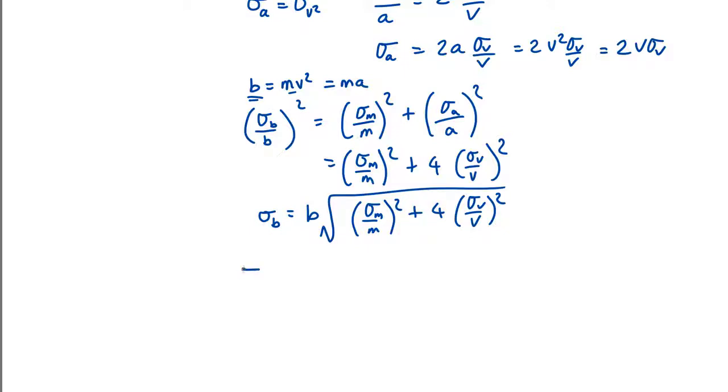So we've now got the uncertainty in the total energy is half sigma b equals half. We've got b here, which is half times b,